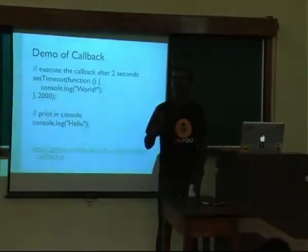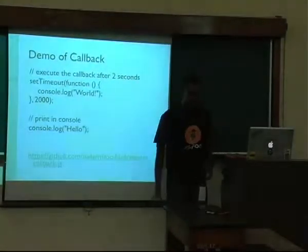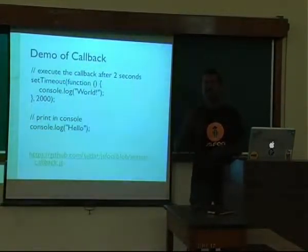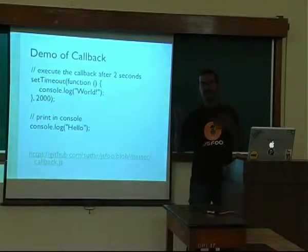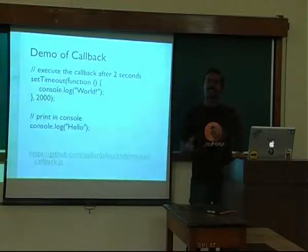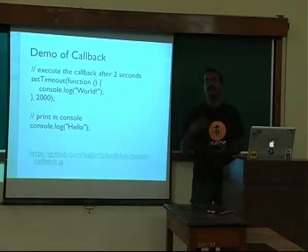The question is, since the evented model is different from the traditional model, how do you do locking? In Node.js, there is no concept of locking. Locking comes into picture when there are multiple threads trying to access a single resource. Here that scenario is not going to happen. Every request which comes in gets a callback assigned to it, so there aren't any concurrent things happening — you don't necessarily need a lock for it.